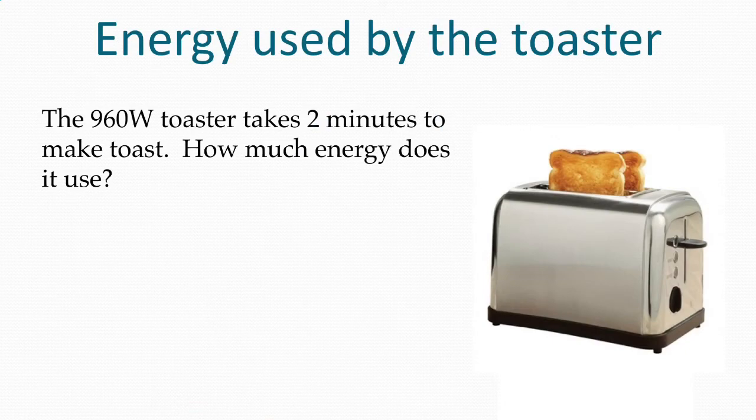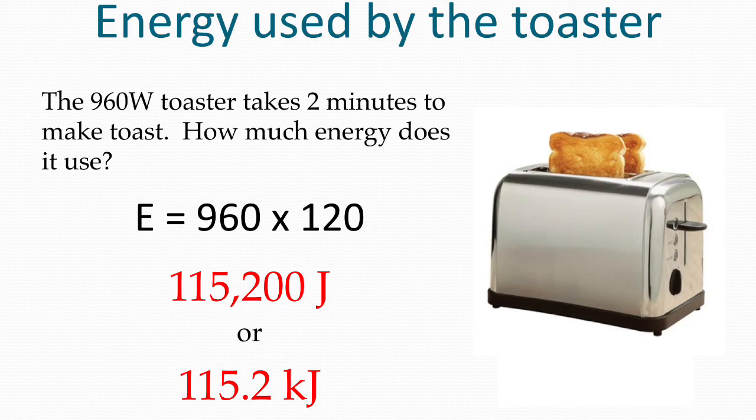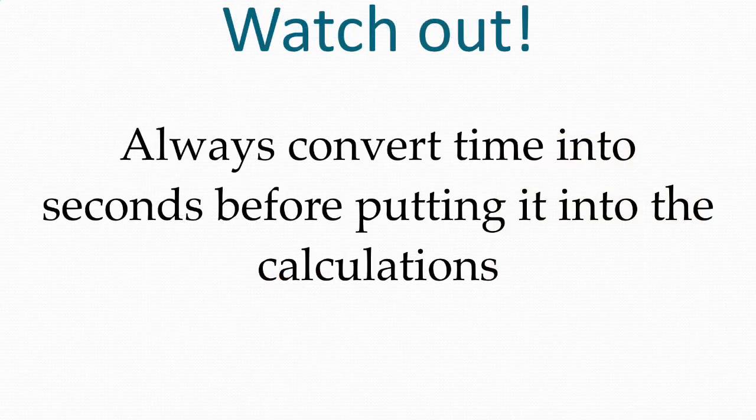Now going back to the same toaster, we have another question for you. The toaster is 960 watts. It takes two minutes to make toast. How much energy does it use? Pause the video and put the answer in your book. Don't forget to change it into base units first, so two minutes would be 120 seconds. So 960 watts times 120 seconds would give you 115,200 joules. Don't forget to always work in seconds when you're dealing with time.